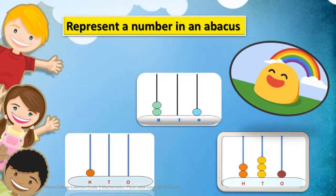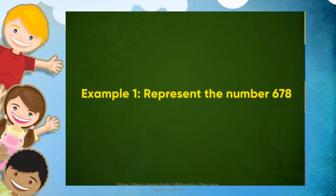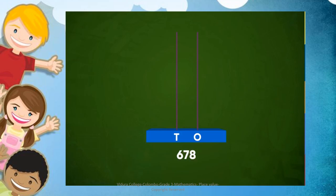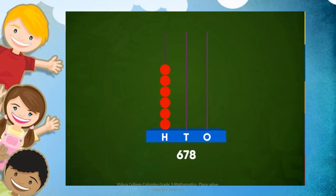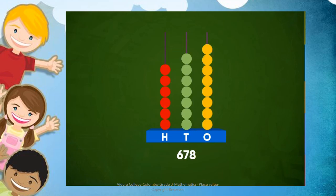Have you ever learned how to draw the abacus? Yes, you already learned it when you were in Grade 2. Representing a number on an abacus — let's take the example 678. This number is a three-digit number, so to represent it we need one more spike. This spike represents the number of hundreds. We know that 678 has 6 hundreds, 7 tens and 8 ones. So we put 6 beads in the hundreds spike, 7 beads in the tens spike and 8 beads in the units spike. Thus the number 678 is represented on the abacus.